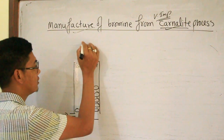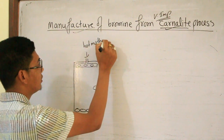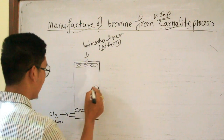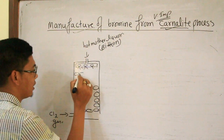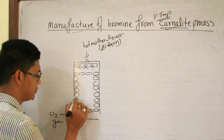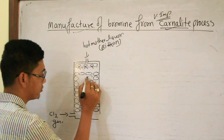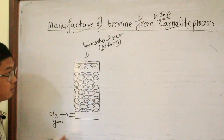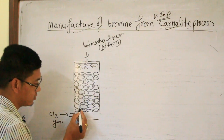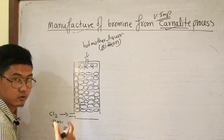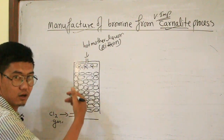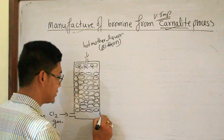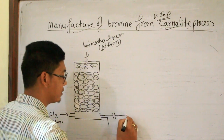The hot mother liquor is treated with chlorine gas. A condenser with a spiral pipe is used to increase the contact time between the chlorine gas and the hot mother liquor.